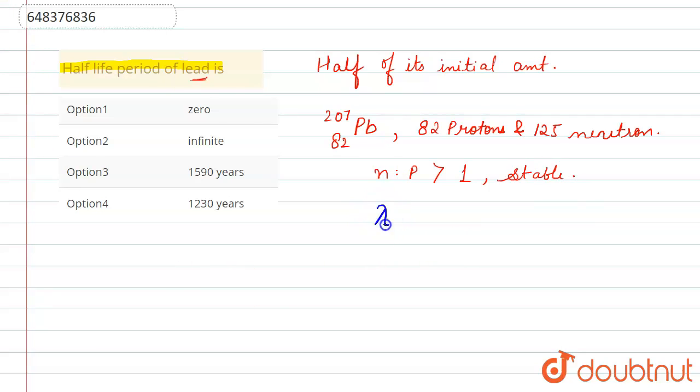we can say that lambda is equals to zero, right. So t half is equals to 0.693 upon lambda, right. So here lambda is 0, so it will be equal to 0.693 upon 0, that is